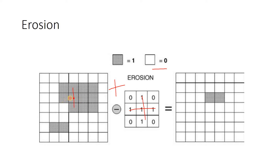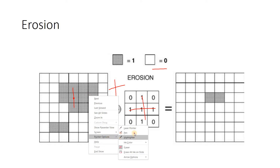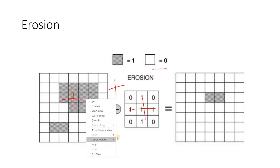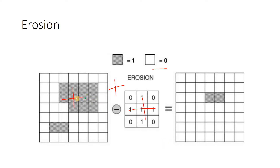Where the structuring element fits — for example if you choose the center here, where left, right, up, and down pixels are all on-pixels — the structuring element will match, so this region will remain in the output image. But anywhere else if you move this particular structuring element it will not fit, and as a result those pixels will wash away. This is the output of erosion. You can check my earlier videos in the image processing playlist for full implementation details.